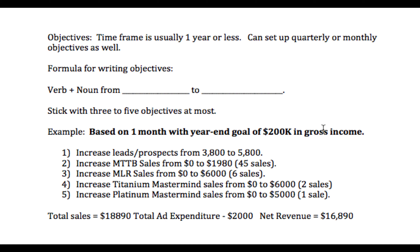My first goal is to increase the leads in my lead funnel from 3,800 to 5,800 — basically increasing it by 2,000. I also want to increase my tier one MTTB sales from zero to $1,980, which is 45 sales at $44 a sale. Then I want to increase my license rate sales from $0 to $6,000 — that's six sales at $1,000 in commissions each.